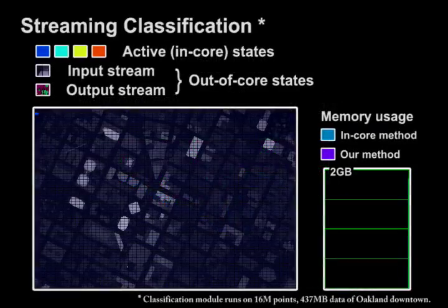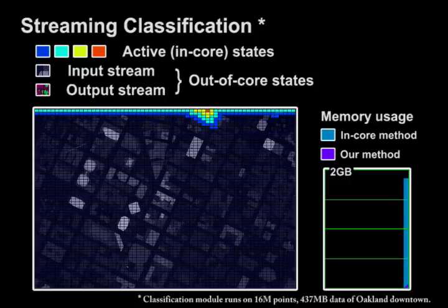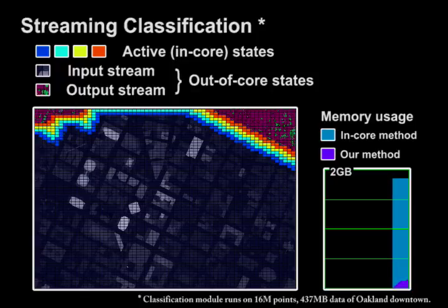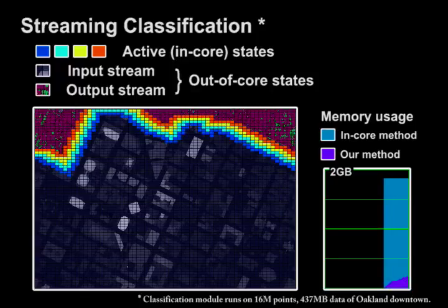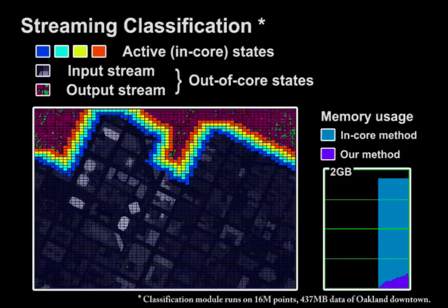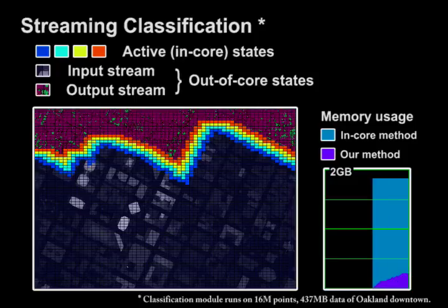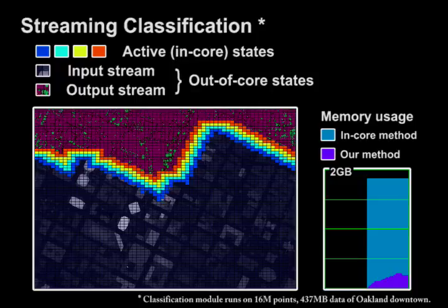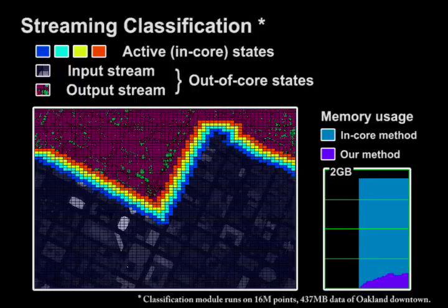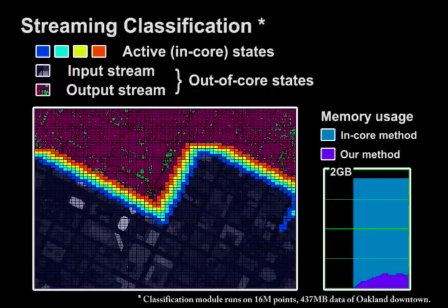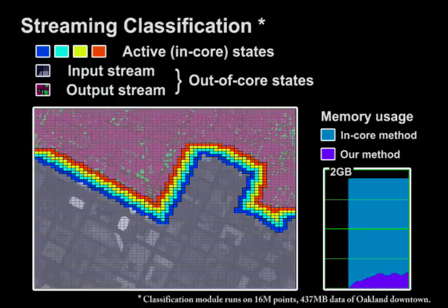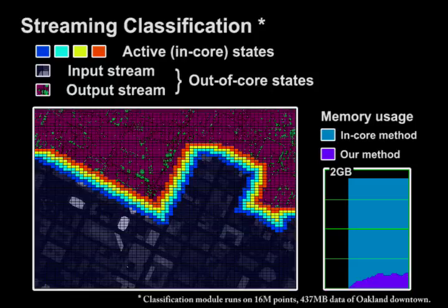The whole LiDAR data is first partitioned into uniform rectangle grids. With the stream indexing structure created and inserted into the original data, a point stream is formed and stored in a disk file. Our streaming classification module sequentially reads from this disk file, loads necessary data in-core, processes it, and once data is no longer needed for further processing, it is written into an output stream. The highlighted area shows the input and output stream, both stored in disk files and consuming no memory.